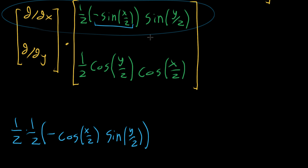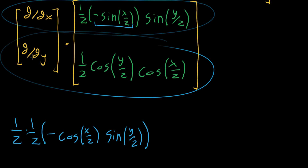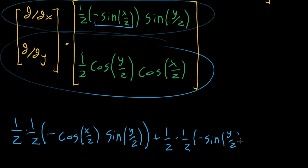We add that to the result of multiplying the next two components. We have that one-half, and differentiating cosine of y over two pulls out another one-half. The derivative of cosine is negative sine, so we get negative sine of y over two. We continue multiplying by the constant cosine of x over two, since as far as y is concerned, cosine of x over two is a constant.